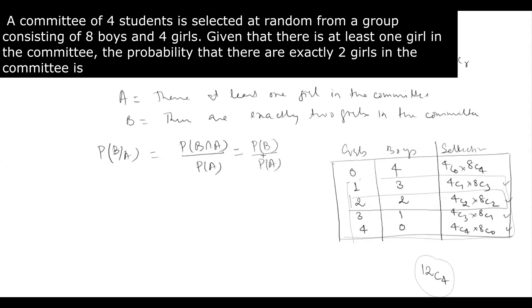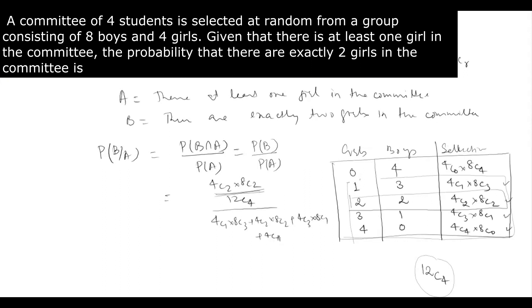P(B) is 4C2 into 8C2 upon 12C4. P(A) is 4C1·8C3 + 4C2·8C2 + 4C3·8C1 + 4C4·8C0, all divided by 12C4. So the 12C4 denominators cancel out.